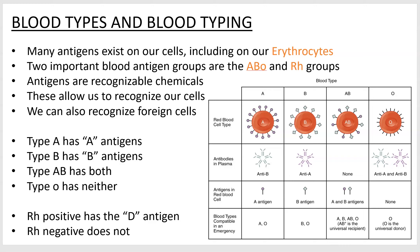Hello and welcome to blood types and blood typing — the second screencast of a PowerPoint presentation. Some background on what blood types are: there are various chemicals that appear on our cells, all over all of our cells, and there are different types of chemicals for different types of cells.